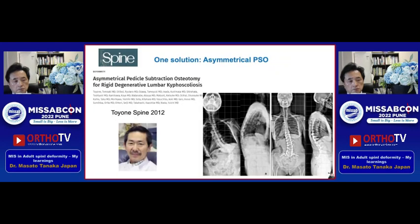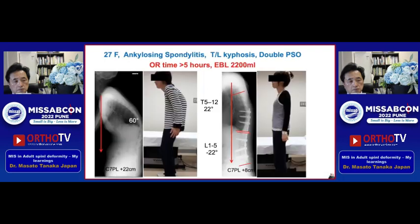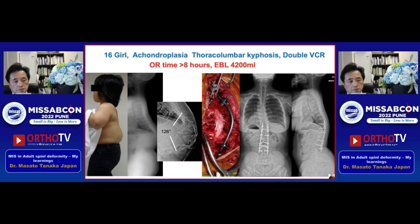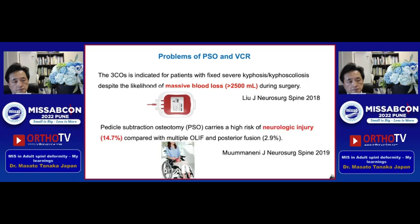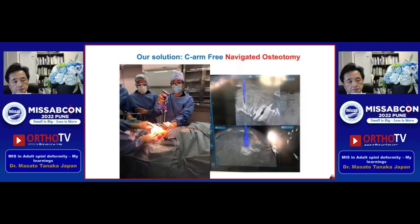One solution for this case is asymmetrical PSO. For ankylosing spondylitis, PSO is a good technique. For this kind of focal kyphosis, VCR is necessary. However, 3-column osteotomy has a risk of massive blood loss. PSO carries a high risk of neurologic injury compared with multiple ORIF and posterior fusion.